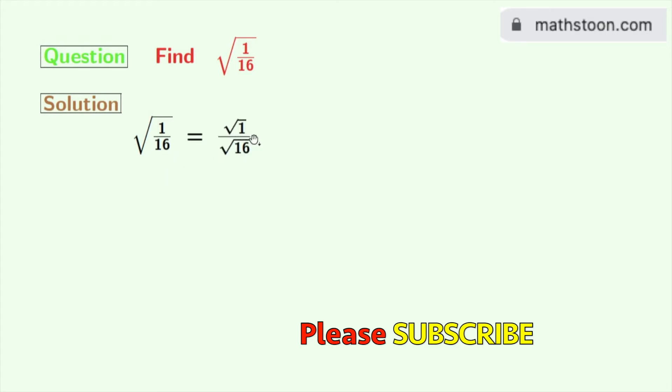square root of 1 divided by square root of 16, as we all know that square root of a by b is equal to root over a divided by root over b. Here a is 1 and b is 16.